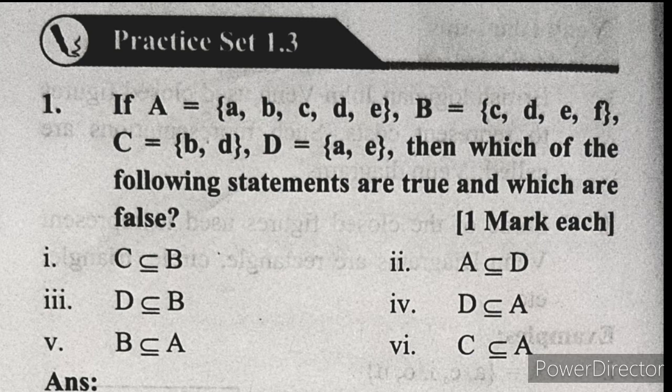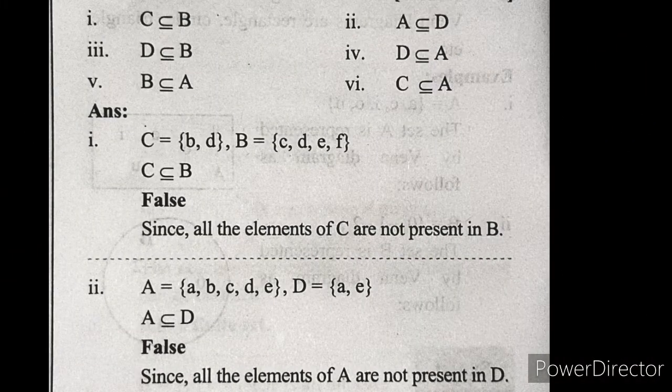The first statement is: C is a subset of B. This means all elements of C should be present in set B. The elements of C are B and D. The elements of B are C, D, E, F. Element B of set C is absent in set B. So C is not a subset of B because all elements of C are not present in B. This is false.